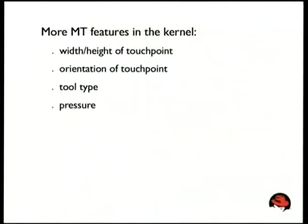The multi-touch protocol has a couple more features: you get width and height of the touch point, the orientation — if you get width and height you always get orientation. You get a tool type — Wacom tablets, for example, can send simultaneous pen and finger events, so the tool type tells you which is the pen and which is the finger. You also get pressure. The history of the multi-touch protocol is pretty much that Henrik wanted his MacBook touchpad to work with multi-touch — that's where the width, height, and orientation come from because they give you ellipses.